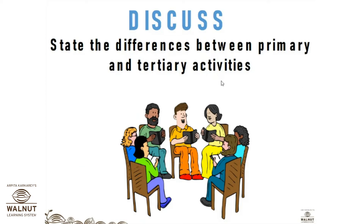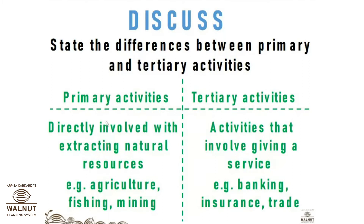Now we have to state the differences between primary and tertiary activities. Primary activities include all those connected with extraction and production of natural resources — agriculture, fishing, and gathering are good examples. Whereas tertiary activities provide support to the primary and secondary sectors through services — transport, trade, banking, insurance, and advertising are some examples of tertiary activities.